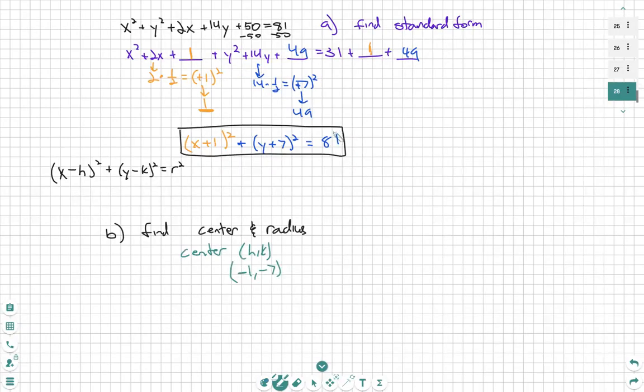The radius is just the square root of what's on the other side of the equal. So our r is equal to square root 81. R is equal to nine.